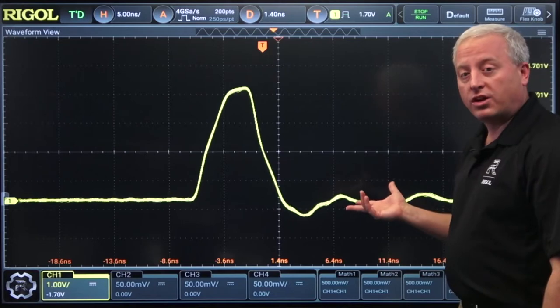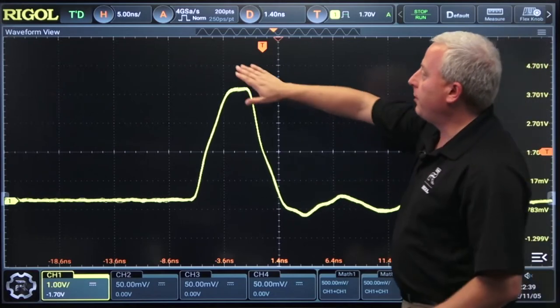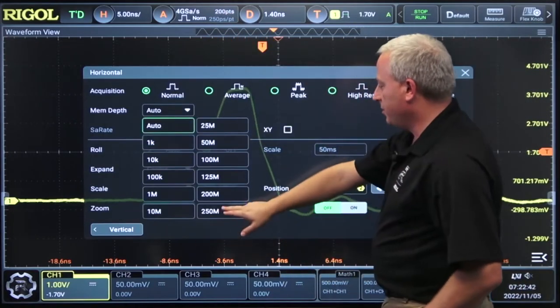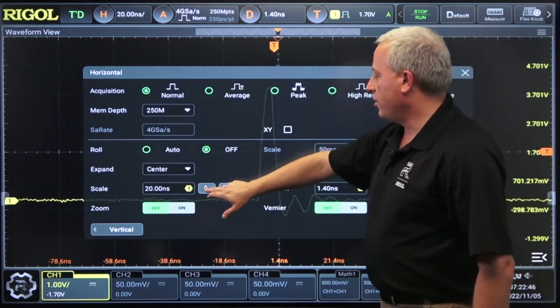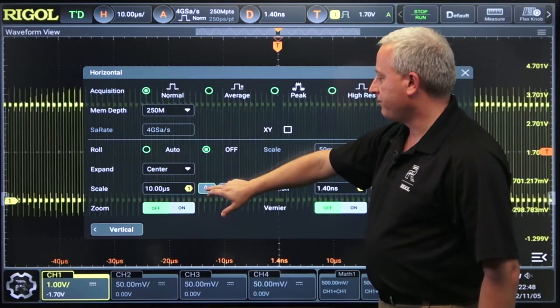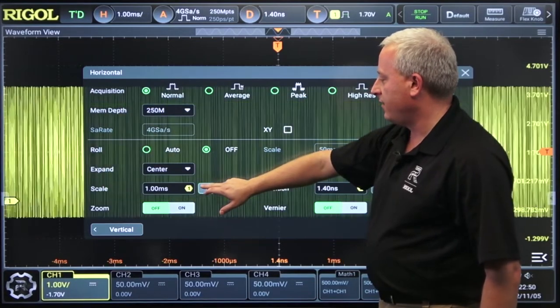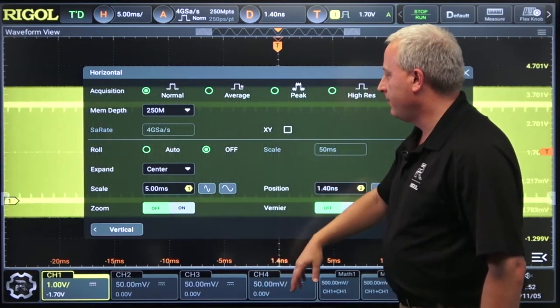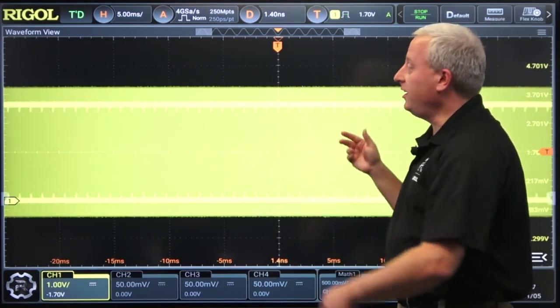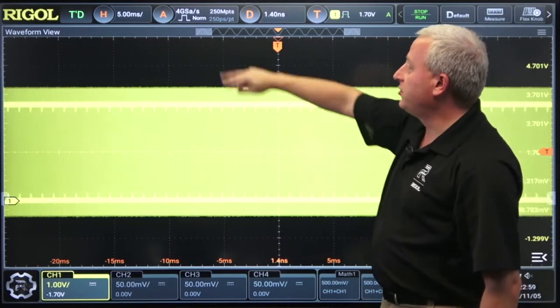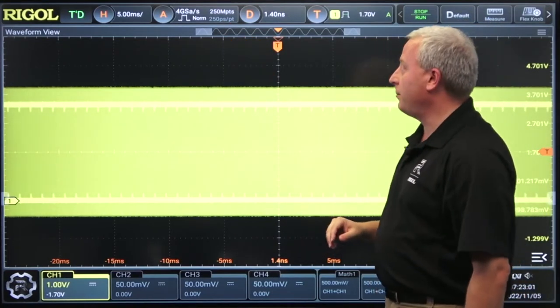To do that, one way we're going to do is use the full memory all at once for this instrument. This instrument has up to 500 million points of memory. Here we can use 250 million points of memory. And let's go out to 5 nanoseconds per division. So here at 5 nanoseconds or 5 milliseconds per division, we have 50 milliseconds across the screen. And because of the deep memory, we've still got full sampling, 4 gigasamples per second.